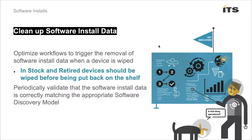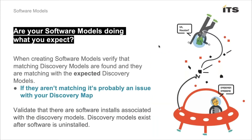You're also going to want to periodically validate that software install data is matching the appropriate software discovery model. That's an automated feature that's part of all SAM inside of ServiceNow — all software installs roll up into an associated discovery model. Very seldom, but I've seen it, some software installs roll up inappropriately to a software discovery model. When I've found that, I've contacted ServiceNow and we've been able to make corrections. So occasionally validate that your software models are doing what you expect.